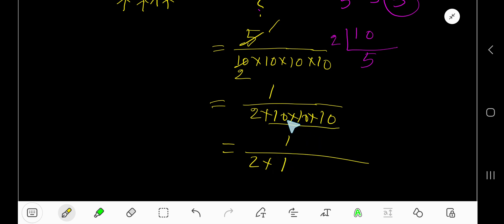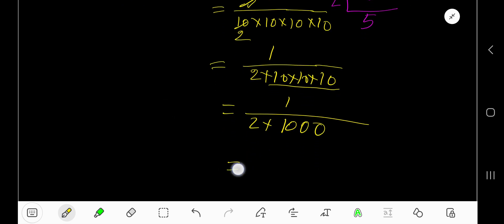Now multiply these two numbers together: 2 times 1000. 1 over 2000 is the answer. There is no common factor between 1 and 2000 except 1, so this is the reduced or simplified form.